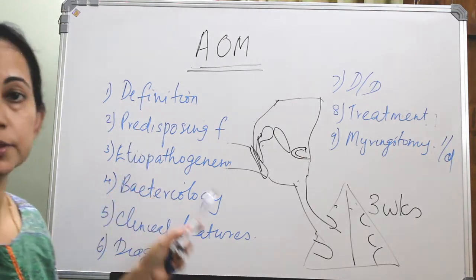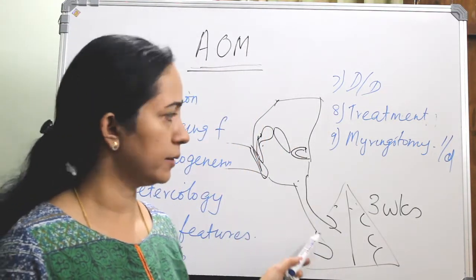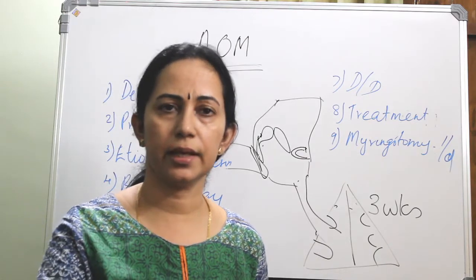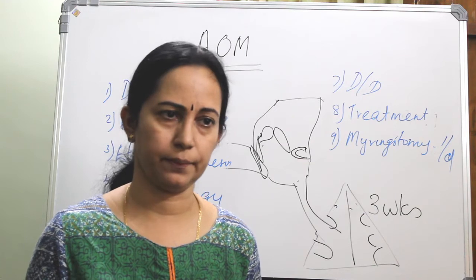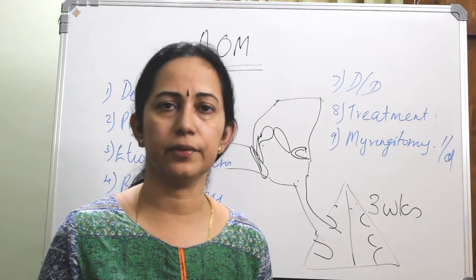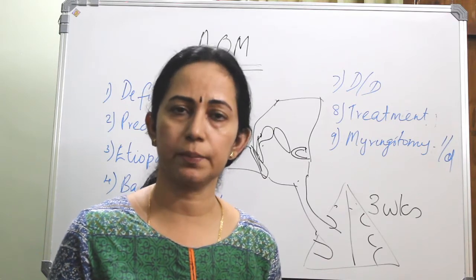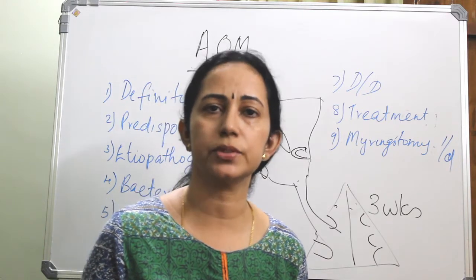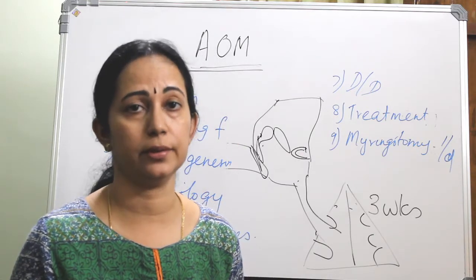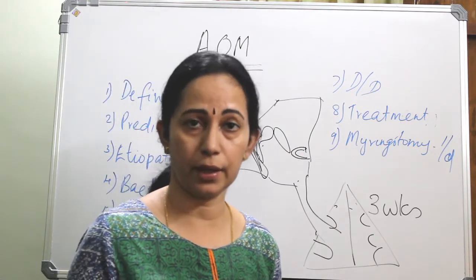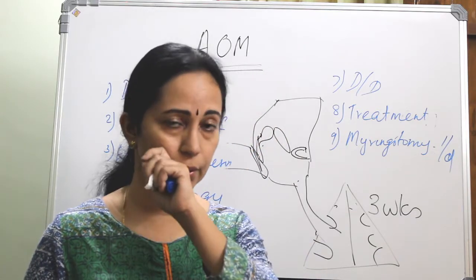What are the predisposing factors? Mainly eustachian tube dysfunction — any conditions causing defective eustachian tube function, like viral infections, infections of the nose and paranasal sinuses, any tumors in the nasopharynx. Most common in children is adenoid hypertrophy, causing recurrent infections and adenoiditis.